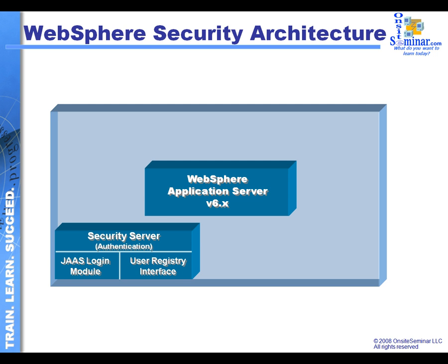One of them is going to be the security server. When we're thinking about authentication-based processing, the security server is the piece inside of the application server environment we're going to be talking about. It's composed of a couple of different pieces. One, I have an interface to my user registry. So if I'm using an LDAP architecture like Active Directory, I want to be able to link those particular pieces together, because the purpose of the security server is to authenticate individuals with different sets of groups and find out what their access control and access privileges are going to be.